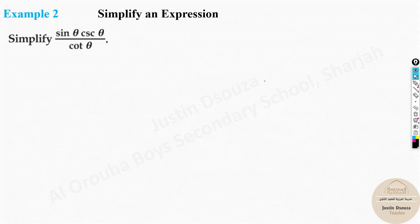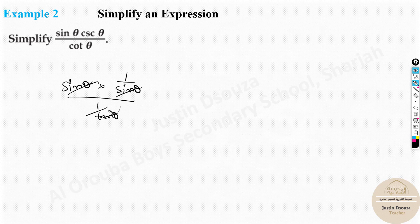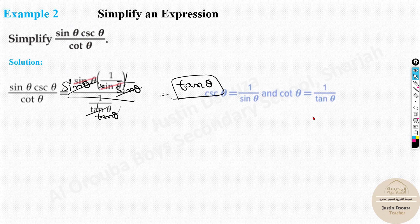First simplification: csc θ / cot θ. Substitute: csc θ = 1/sin θ, and cot θ = 1/tan θ. So the expression becomes (1/sin θ) ÷ (1/tan θ) = (1/sin θ) × tan θ. The 1/sin θ and sin θ in tan θ = sin θ/cos θ cancel, leaving tan θ. The simplified answer is tan θ.